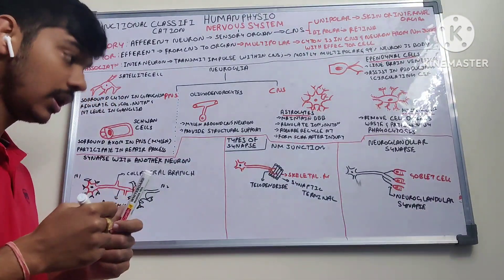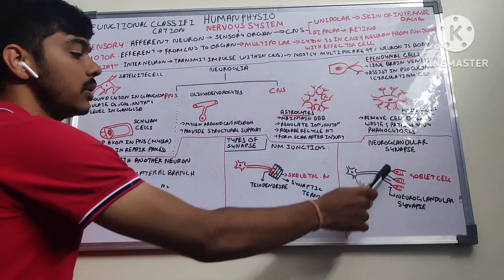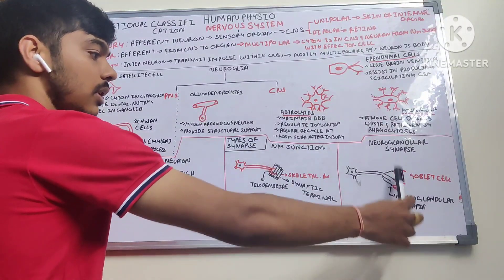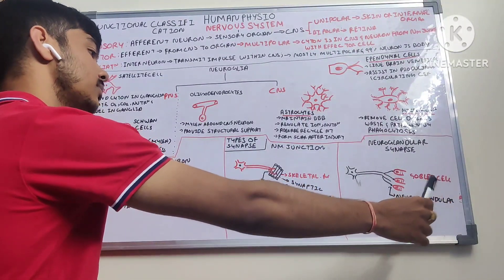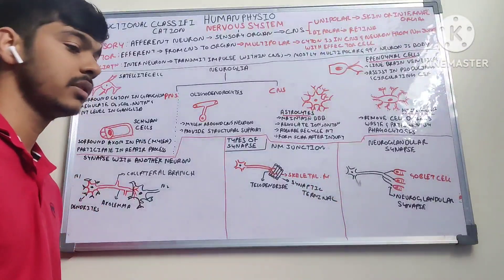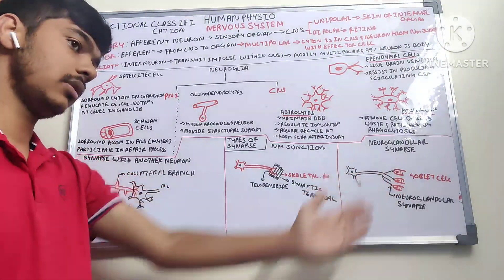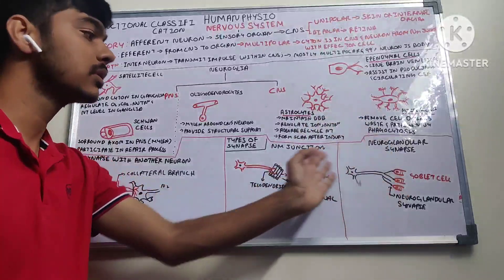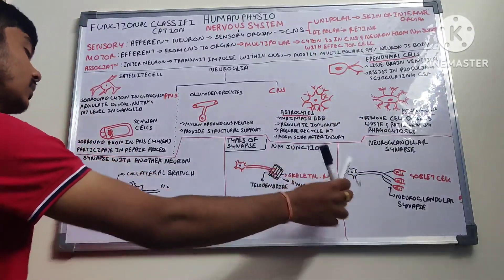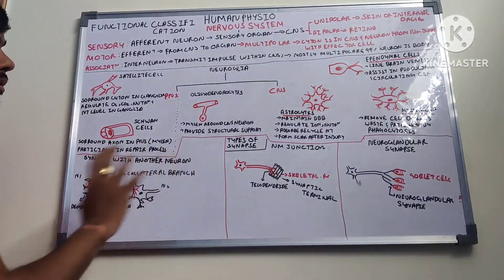The neuroglandular synapse is similar to the neuromuscular junction but the effector is a gland. For example, goblet cells — which are responsible for the secretion of mucus — release mucus on getting a stimulus from the neuron. So these are the three structural types of synapse.